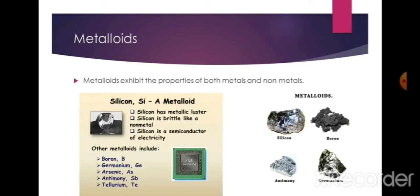Metalloids exhibit the properties of both metals and non-metals. For example, silicon is a metalloid. Silicon has metallic luster, meaning it shines like a metal. Silicon is brittle like a non-metal, and silicon is a poor conductor of electricity like a non-metal. So metalloids exhibit both metallic and non-metallic properties.